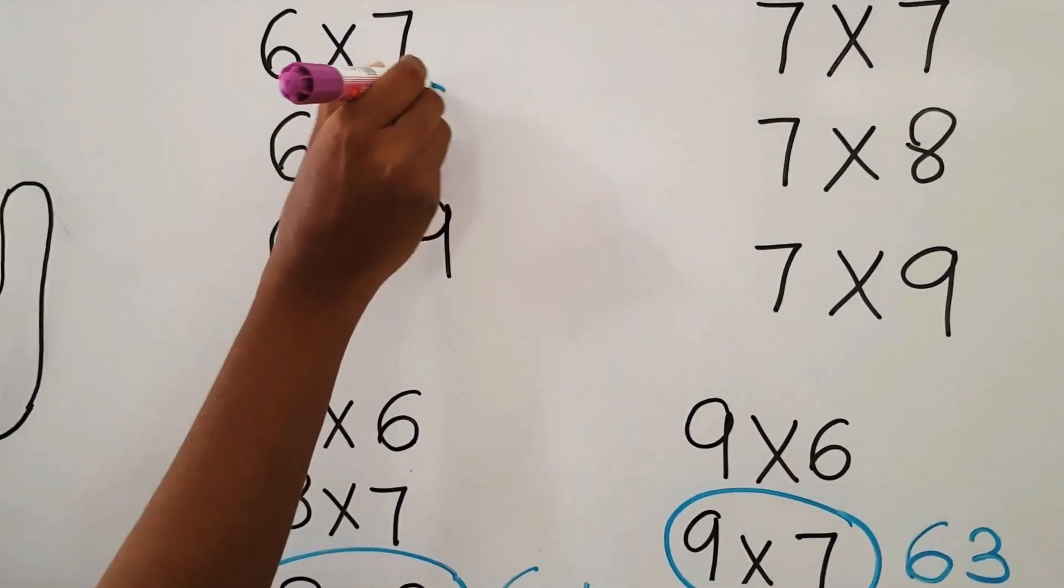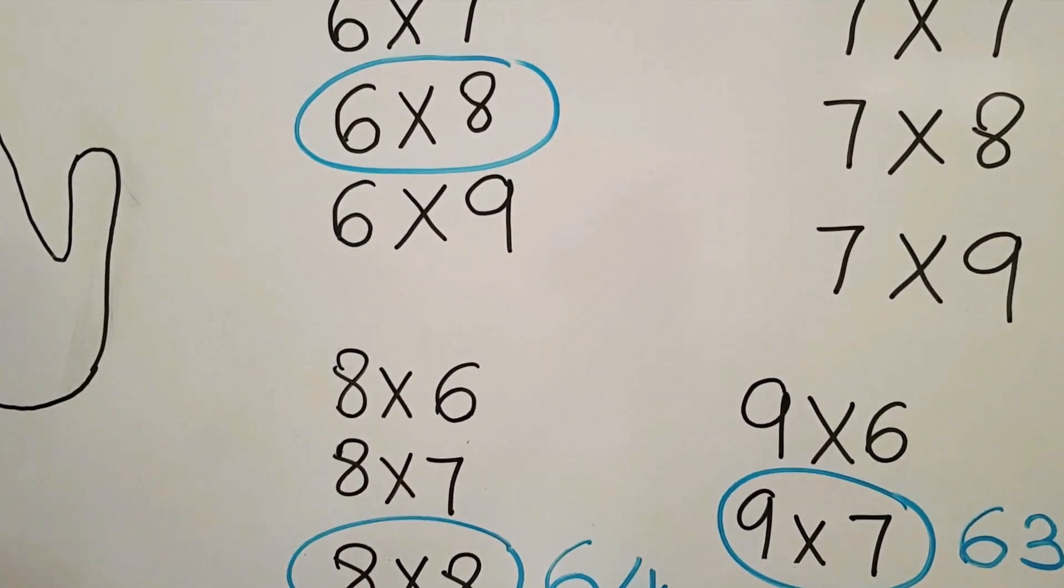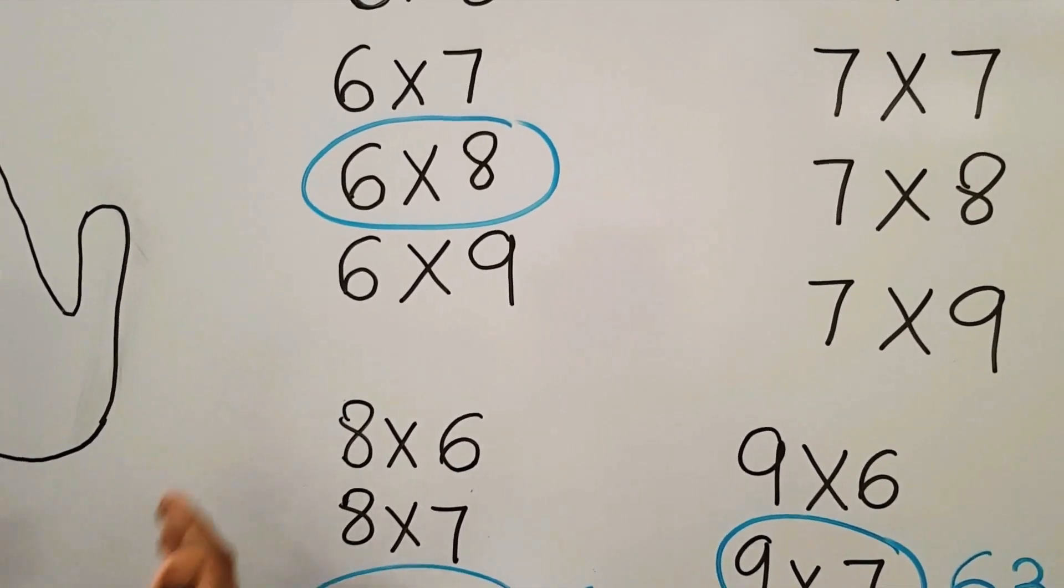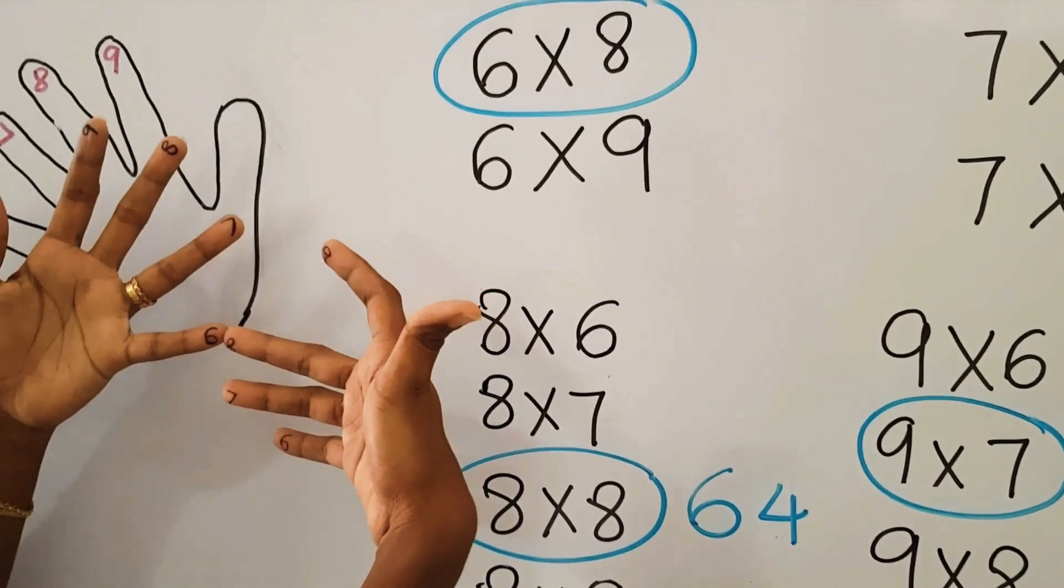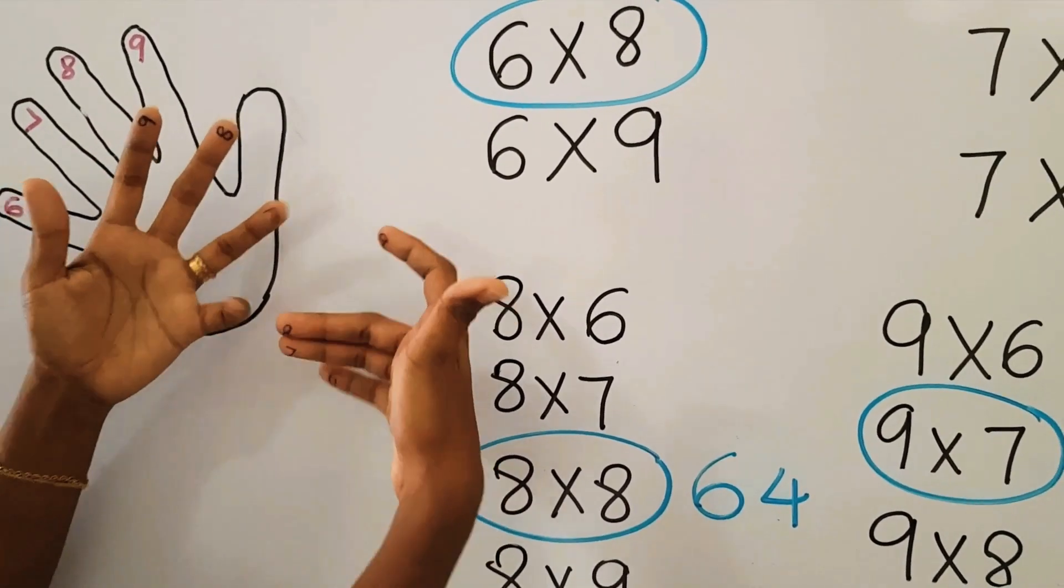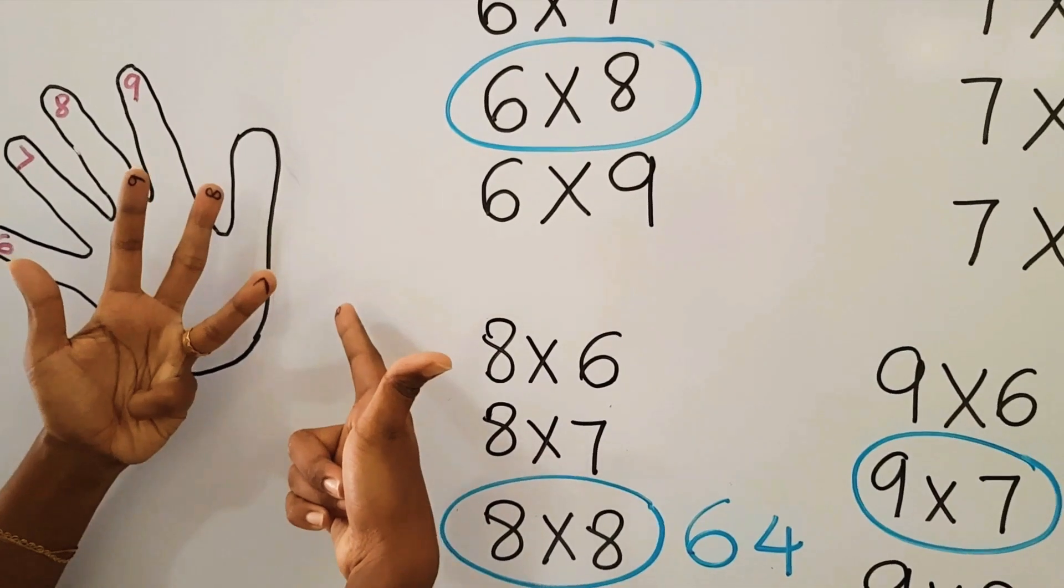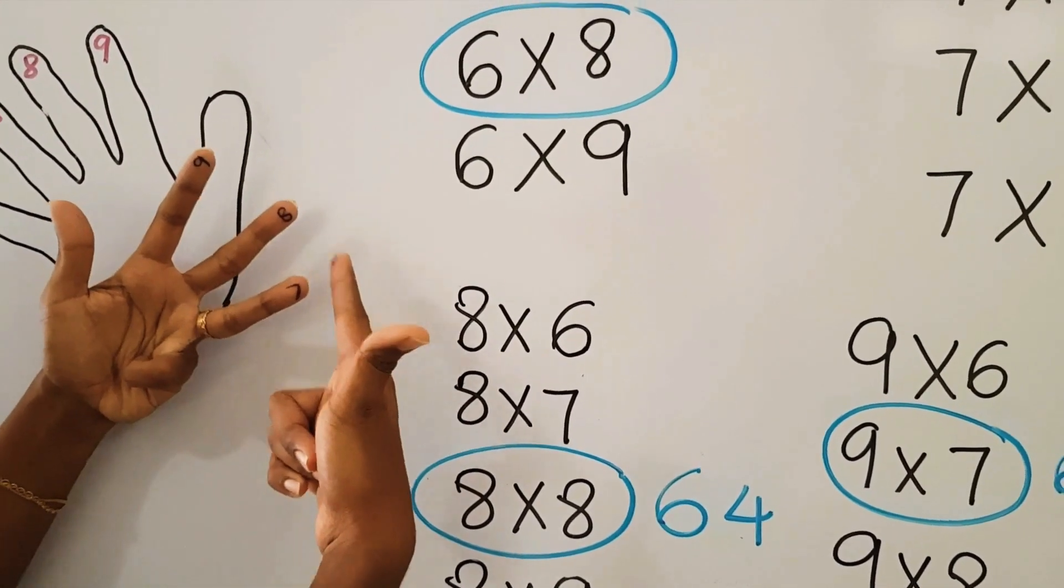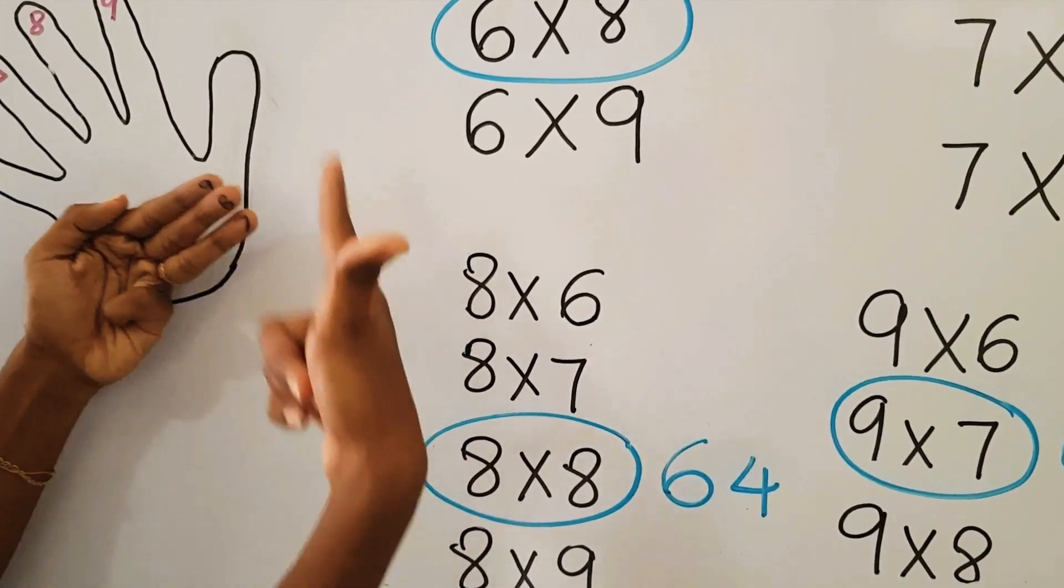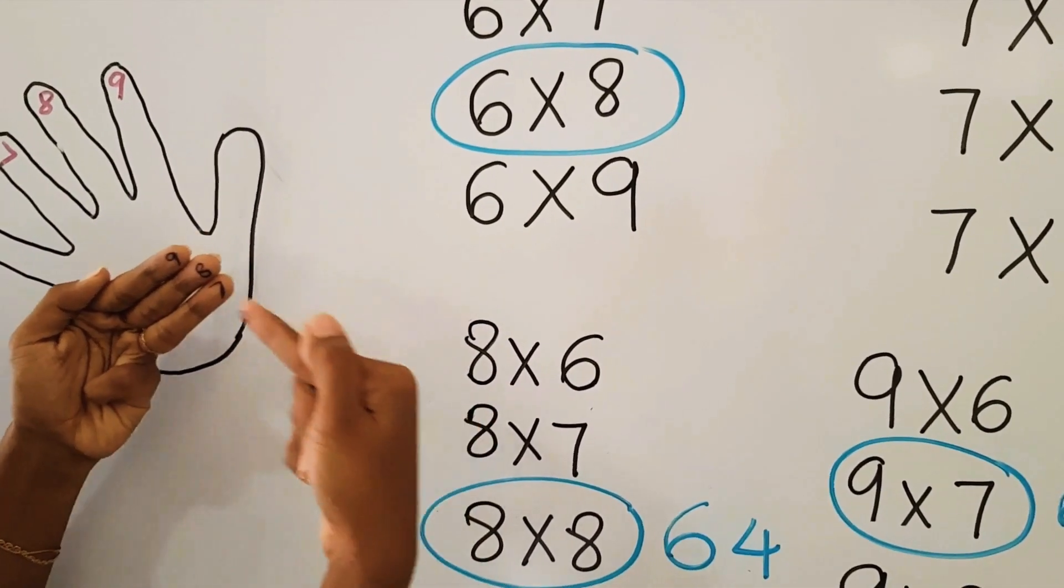Let's move on to another sum. Let's see 6×8. When we are doing 6×8, we take 6 from the first hand, 8 from the other, and we fold. How many fingers do we fold? 4 fingers. Once we fold the 4 fingers, what is the balance on top? There's 4 balance and 2. So 4×2 will give us 8.